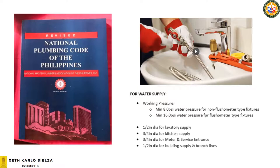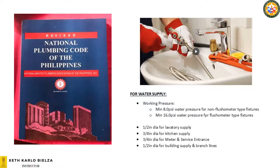For the building supply, the minimum is 1 inch diameter. Of course, the building supply and main water line depend on the demand we compute from our water supply fixture units. The size of our branch lines also depends on what fixtures will be tapped into them.